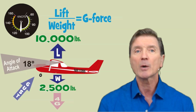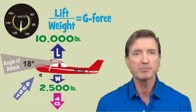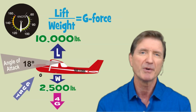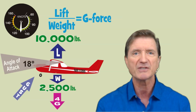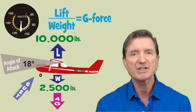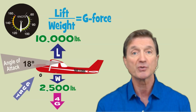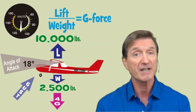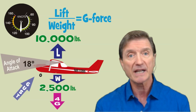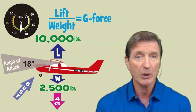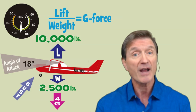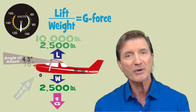Now, if the airplane limit load factor was plus 4 g's — and it's typically 3.8 g's, but 4 g's makes for easier math — then we won't exceed this value since the wings have reached an angle of attack of 18 degrees, which is the critical angle of attack for this airplane. Increase the angle of attack further and the airplane will stall. Okay, let's talk about how maneuvering speed is affected by weight.